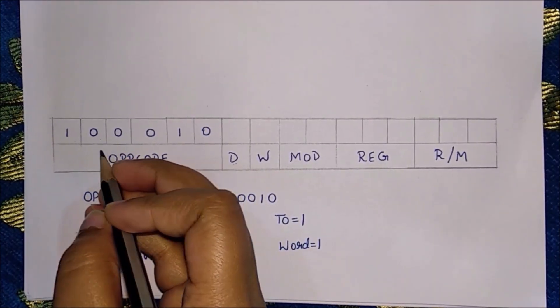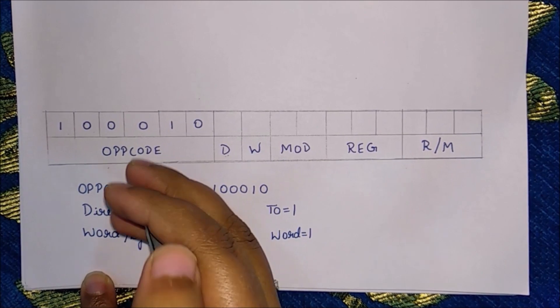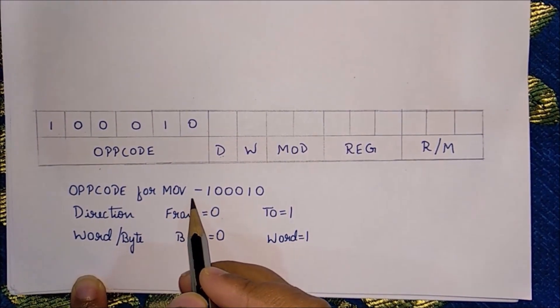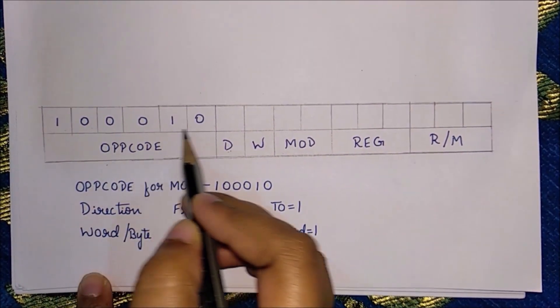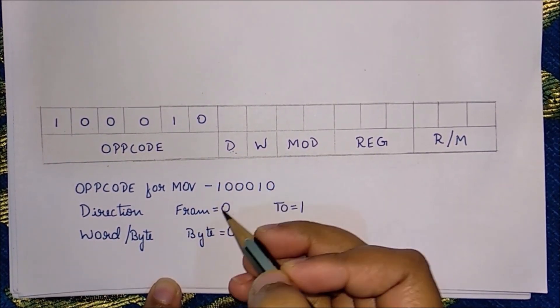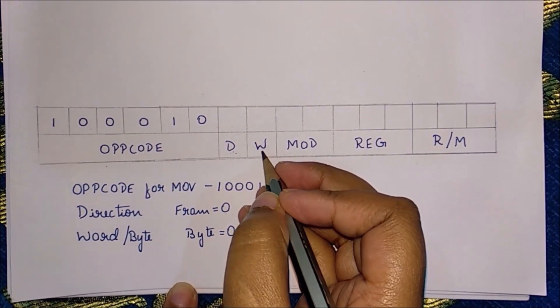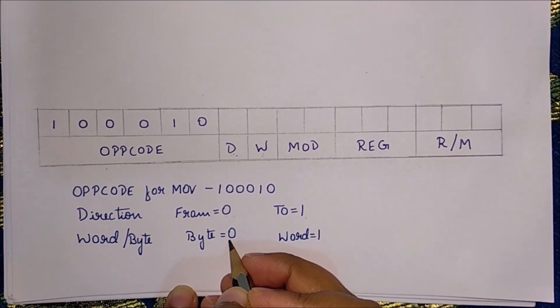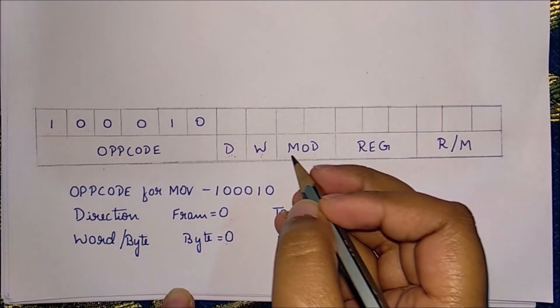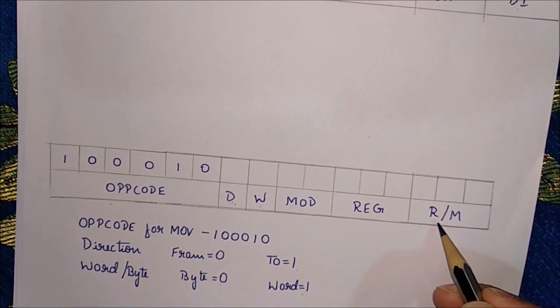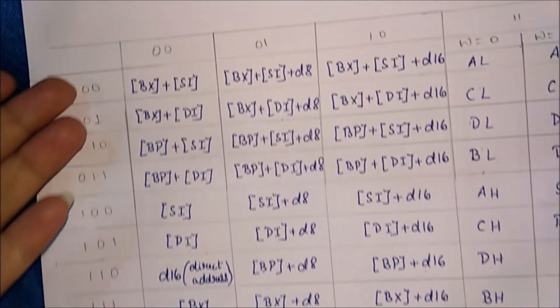This is Prachi and I am going to explain how to write machine code for a given MOV instruction using the table explained previously. The first 6 bits are reserved for the opcode for the MOV instruction, which is 100010. This is the same for all questions. Then comes direction D: 0 if transfer is from a register, 1 if transfer is to a register. Then comes word: 0 for byte transfer, 1 for word transfer. Then comes mod, determined by the addressing mode from the table. Then comes register, and finally R/M (register or memory), both looked up from the table.